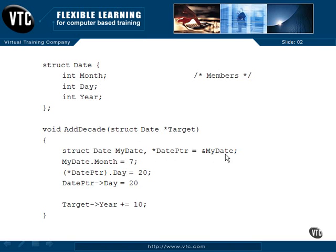We have set the address of myDate into datePointer. Now we can say myDate dot month equals 7 — that's our normal member access method with a dot. Now here's how you use the pointer: datePointer is pointing to myDate. We can say datePointer dot day equals 20, but because of how the dot operand and the pointer asterisk work, we need to use parentheses around this to bind it properly, so we actually go to the contents of datePointer dot day. That just gets really messy and hard to remember.